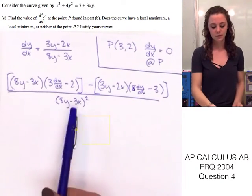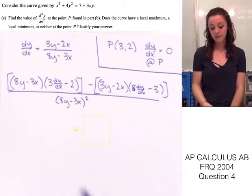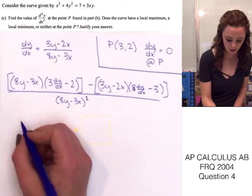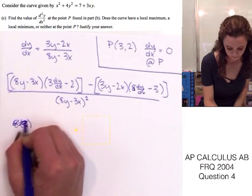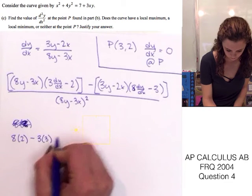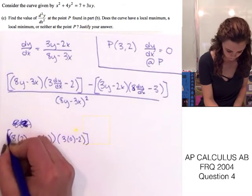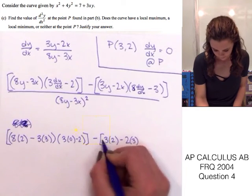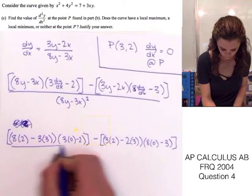Now that we have the derivative, we found the derivative of the first derivative. So, we found the second derivative. We can go ahead and plug in all these values to find the value of the second derivative at P. So, x is 3, y is 2, and dy dx is 0. So, I'm going to go ahead and plug all those in.